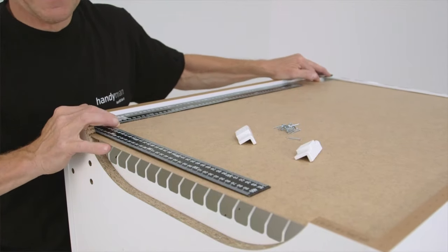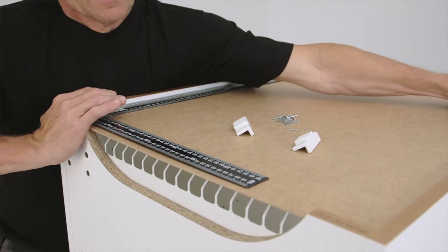By using a tri-square, you can easily make sure the angle of the cabinet is correct.